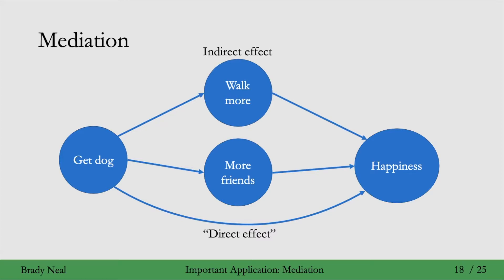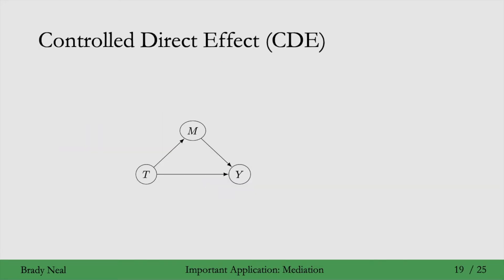So how can we measure these indirect and direct effects? We'll start with the direct effect. You have this causal graph, and you want to measure just the flow from T to Y — you don't want to measure the causation flowing along the path going through M.